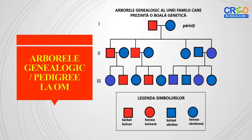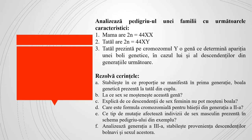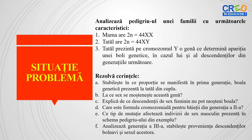Observă diagrama arborelui genealogic al unei familii care prezintă o boală genetică. Urmărește simbolurile diagramei. Analizează cu atenție cerințele situației problemă propusă și formulează concluziile.